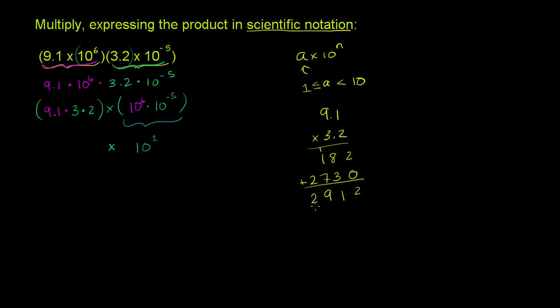So 91 times 32 is 2,912. But I didn't multiply 91 times 32. I multiplied 9.1 times 3.2. So what I want to do is count the number of digits I have behind the decimal point. I have 1, 2 digits behind the decimal point. And so I'll have to have 2 digits behind the decimal point in the answer. So 1, 2, I'll stick the decimal right over there. So this part right over here comes out to be 29.12.